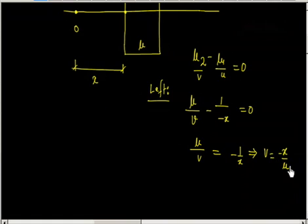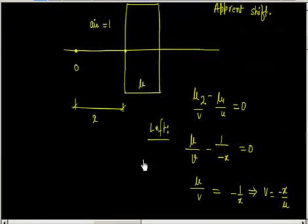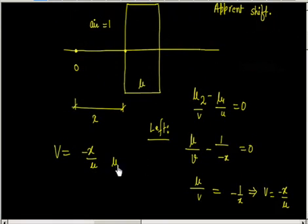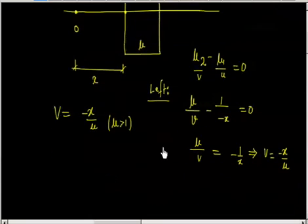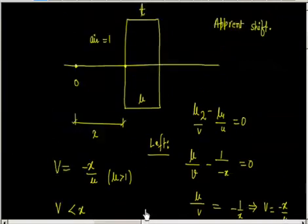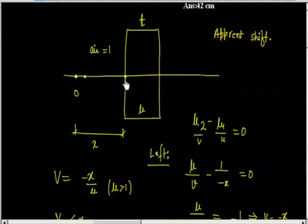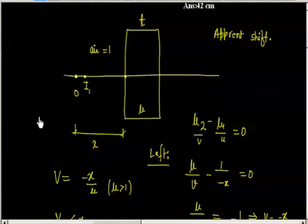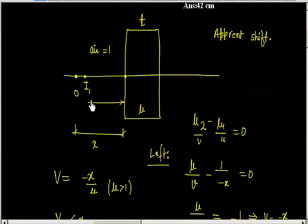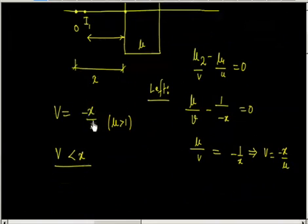Solving this, mu/V equals minus 1/x, so V equals minus x/mu. Since mu is generally greater than 1, V is less than x. So the image I1 formed due to the left surface is at a distance x/mu from that surface.